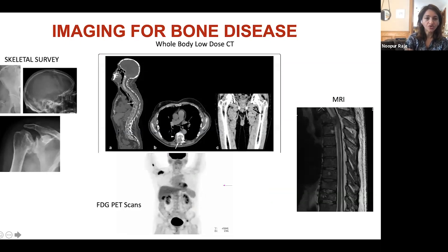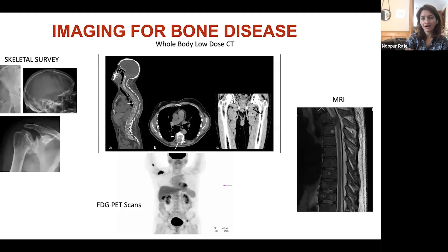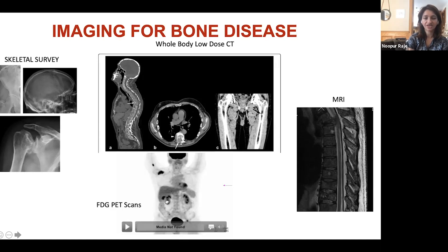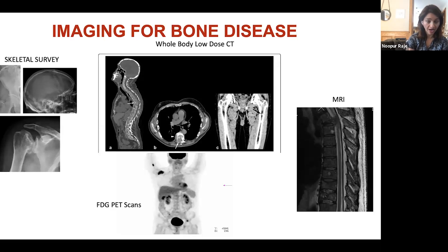In the old days, we used to do x-rays on all patients, but for x-rays to be positive, you have to have quite advanced bone disease. With the advances in myeloma treatment, we've also begun to do quite well in terms of diagnostic platforms. We no longer do skeletal surveys; most patients should be getting a whole body low-dose CAT scan, which is able to pick up bone disease in more than 90% of patients. There are also more functional imaging modalities such as an FDG PET scan, which is useful for a specific patient population who may not have a lot of protein in their bloodstream.